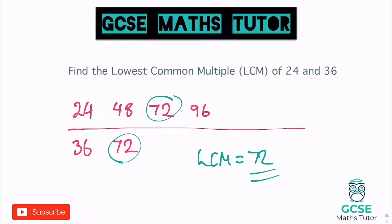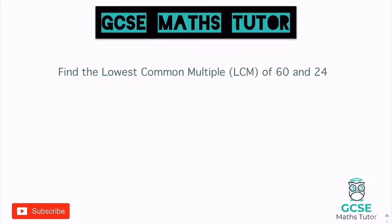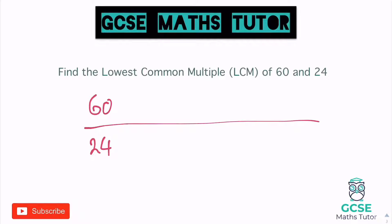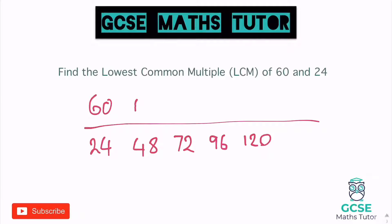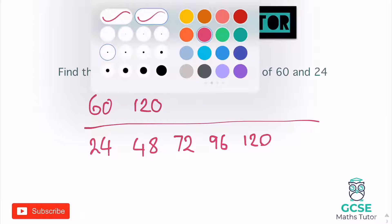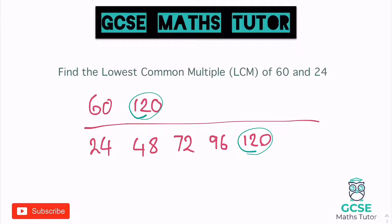So 72 is our lowest common multiple. One more before you have a go: find the lowest common multiple of 60 and 24. I know that all the numbers in the 60 times table will keep ending in a zero. So I'll start with 24 and find the first multiple that ends in a zero: 48, 72, 96, 120. And if we go to our next one on 60, we get 120. So 120 is our lowest common multiple.